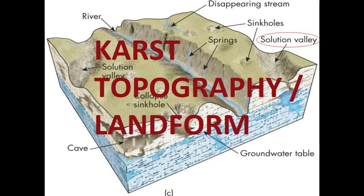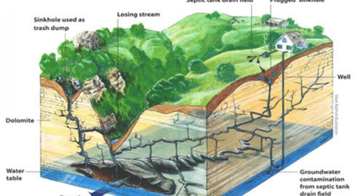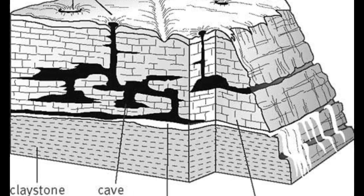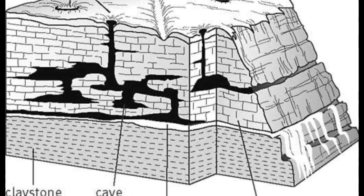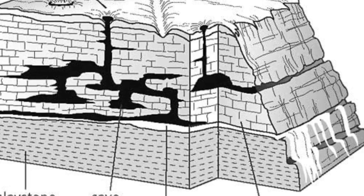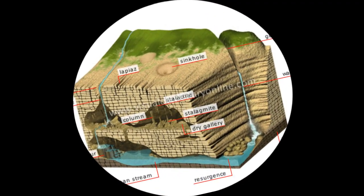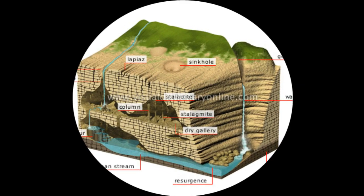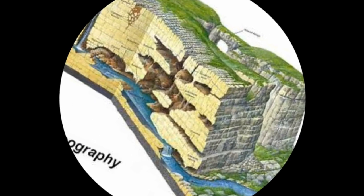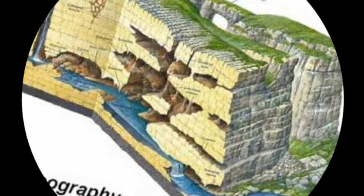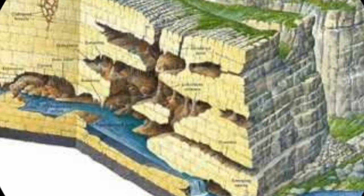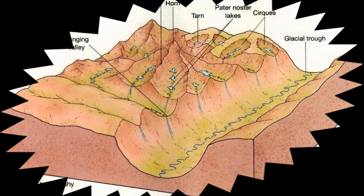Karst is a topography formed from the dissolution of soluble rocks such as limestone, dolomite, and gypsum. It is characterized by underground drainage systems with sinkholes and caves. It has also been documented for more weathering-resistant rocks, such as quartzite, given the right conditions. Subterranean drainage may limit surface water, with few to no rivers or lakes.